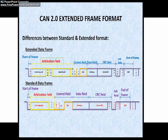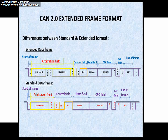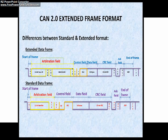The length of the standard format identifier is equal to 11-bit base ID, as you can see in this picture. Therefore the number of identifiers are equal to 2 to the power of 11, that is 2048 identifiers ranging from 0 to 2047. In the extended format, the identifier length is 29 bits — 11-bit base ID plus 18-bit extended ID — giving 2 to the power of 29 identifiers, equal to 536,870,912.